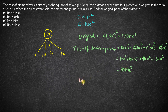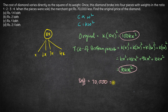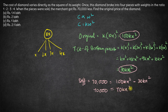The difference in price is 70,000 as given. When the pieces are sold, the merchant got 70,000 less than he would have earned selling the original diamond. So the difference between the original cost and the broken pieces cost is: 100kx² - 30kx² = 70kx² = 70,000. Therefore kx² = 1,000.